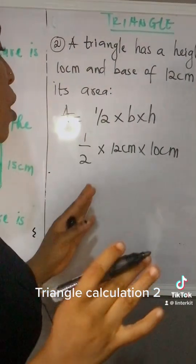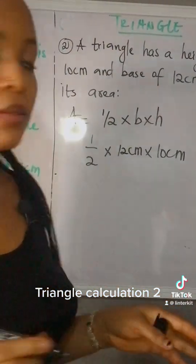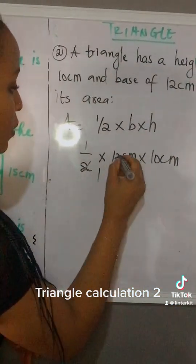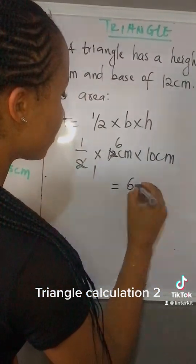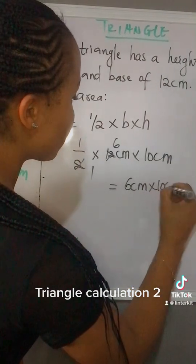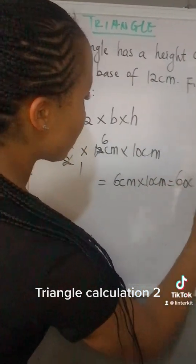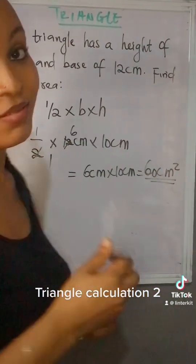So we have to take everything to its lowest step. 2 into 2 is 1, 2 into 12 is 6. So we are left with 6 cm times 10 cm. So that would be 60 cm squared.